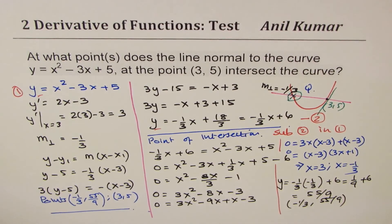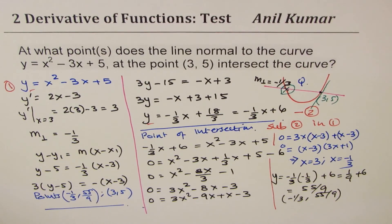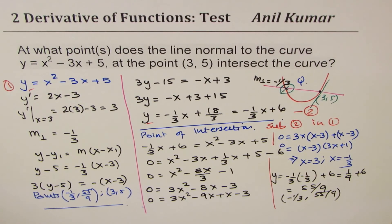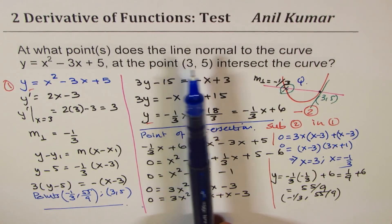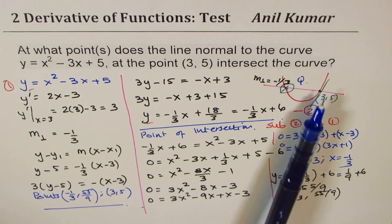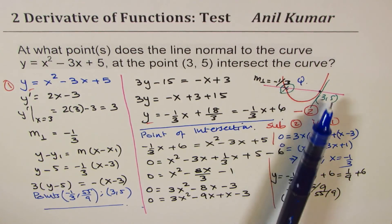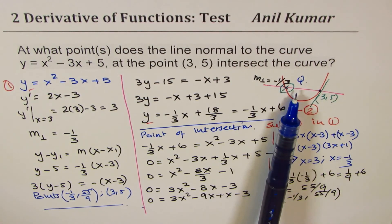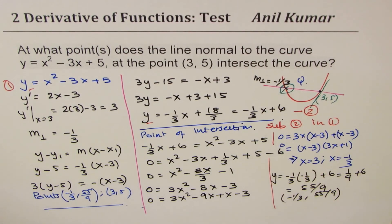So the points where the normal to the curve intersects the curve are (3, 5) — which was given — and (-1/3, 55/9). The problem is a bit tricky because of the wording, but the method is: find the tangent slope, take the negative reciprocal to get the normal slope, find the equation of the normal, then find the point of intersection.